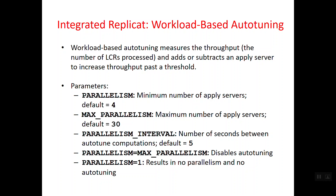By default the minimum is 4 and the maximum is 30. You can set max parallelism to a lower value like 15 or 10, because going up to 30 processes takes significant RAM. If you set parallelism equal to max parallelism — for example both set to 5 — integrated replicate will always start exactly 5 processes and auto-tuning is disabled.